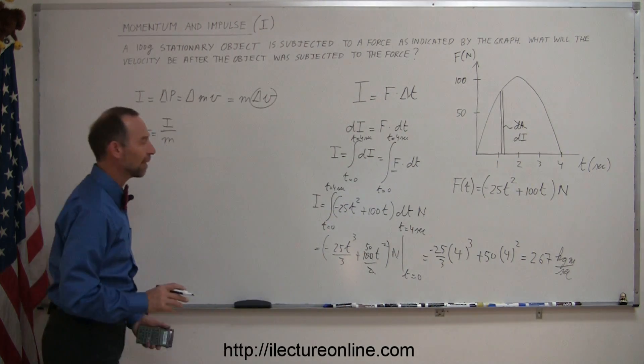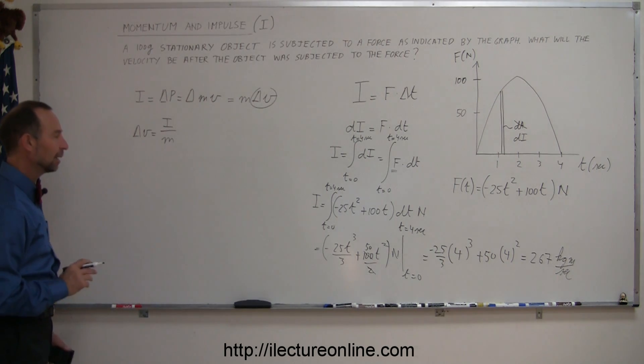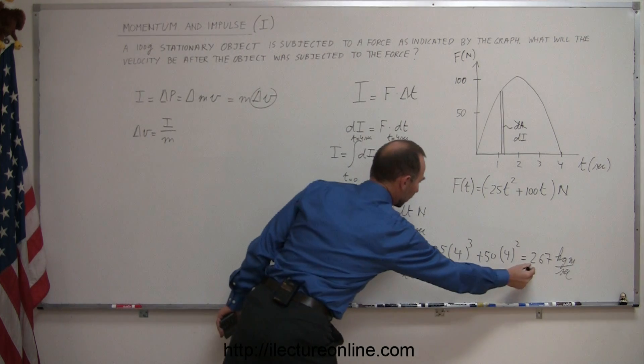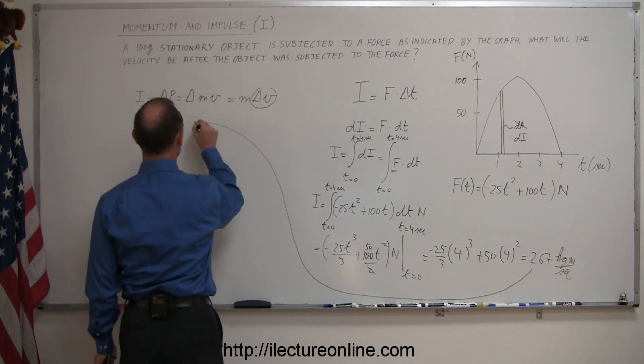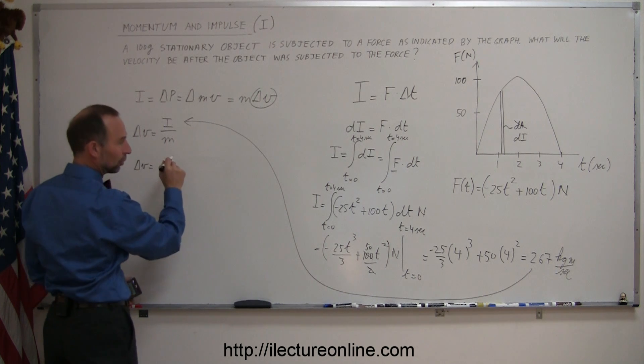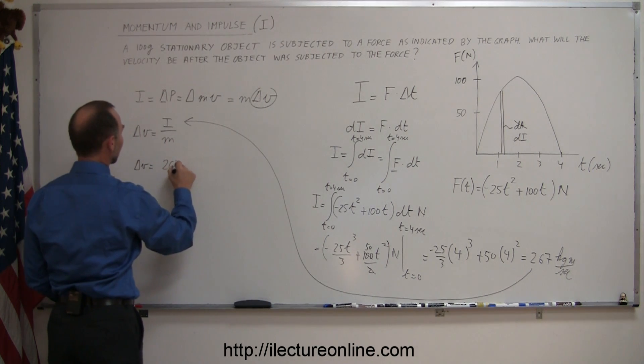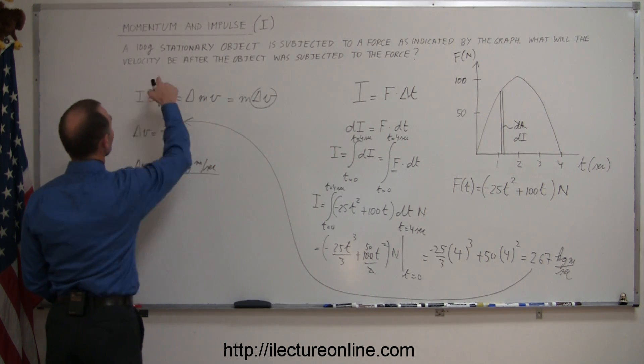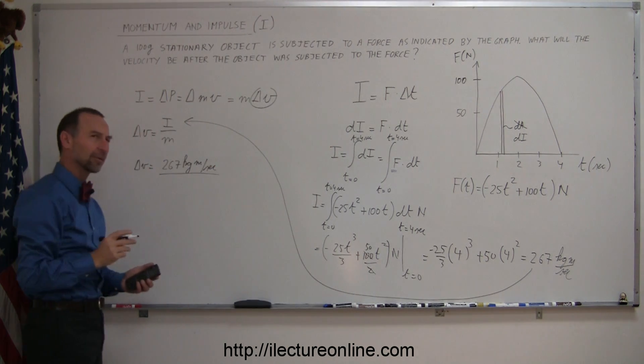Now I have my change in momentum, the impulse, which can go in here. This result will be plugged back in. We can say that the change in velocity is equal to 267 kg·m/s divided by the mass.